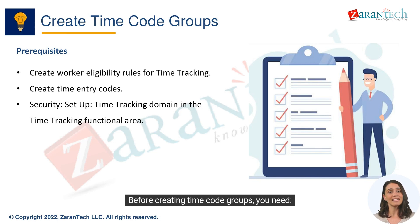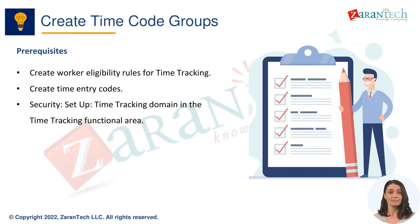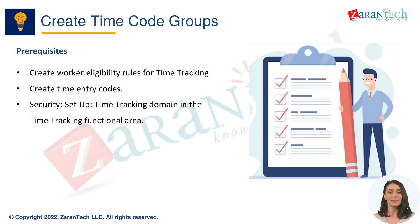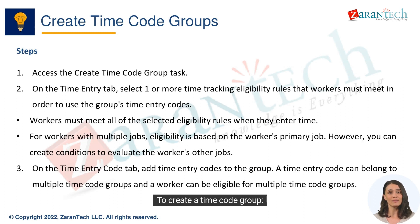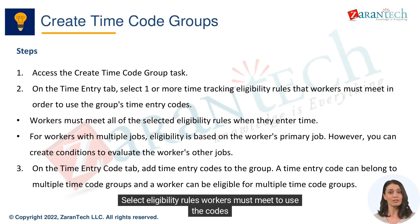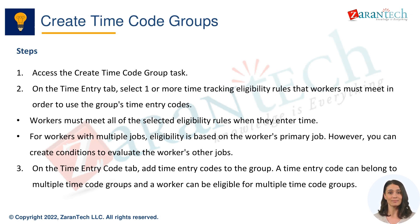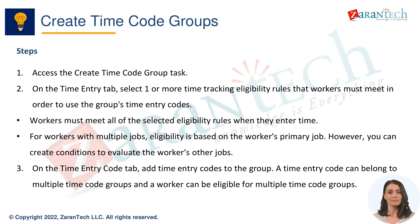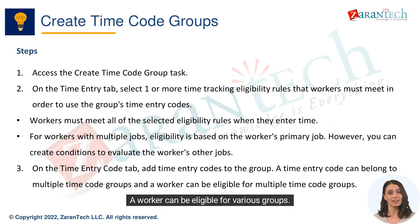Before creating time code groups, you need worker eligibility rules, time entry codes, and security access to the time tracking domain. To create a time code group, access the Create Time Code Group task, select eligibility rules workers must meet to use the codes, and add time entry codes to the group. A time code can be in multiple groups, and a worker can be eligible for various groups.